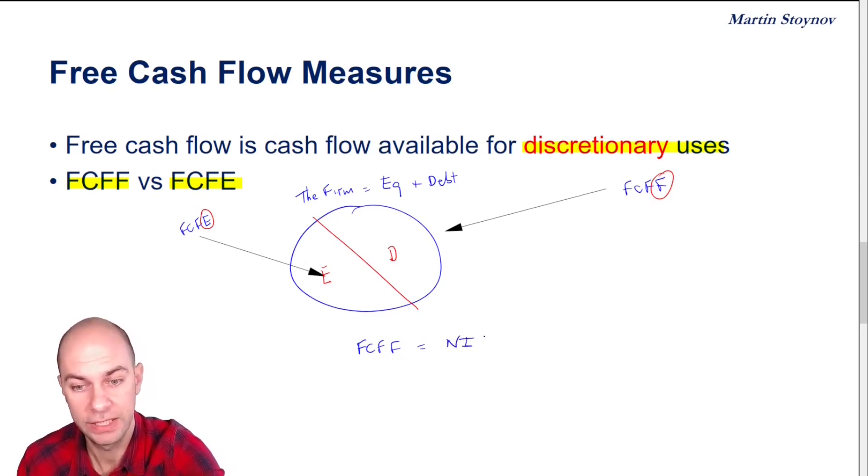So if I start with NI, that's my net income. The first thing that I'm going to do is add back my non-cash charges.